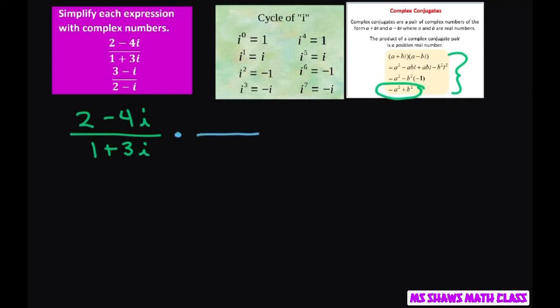So the conjugate of 1 plus 3i is 1 minus 3i, and then we're just going to multiply that. If you multiply the denominator by that, you also multiply the numerator by that. There's nothing to say you can't have a radical in the numerator, it just can't be in the denominator.